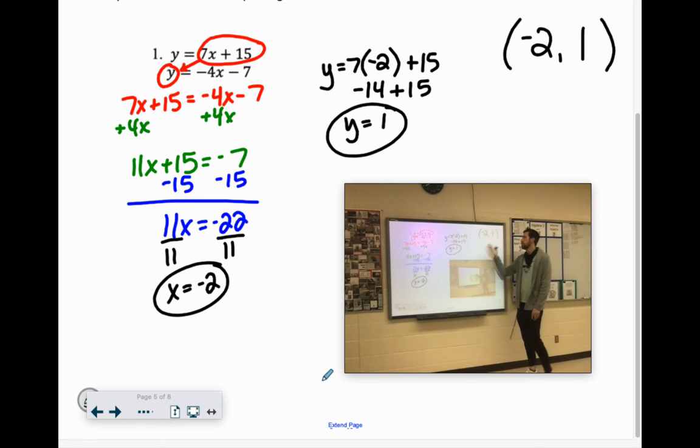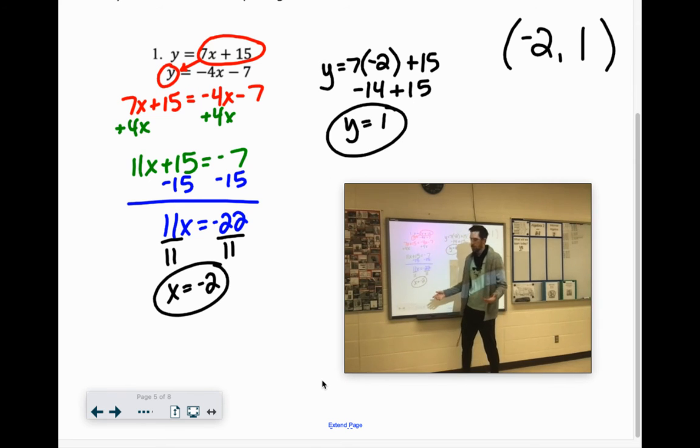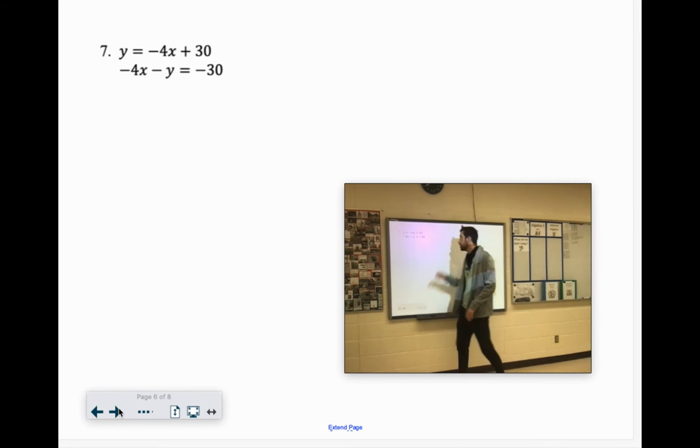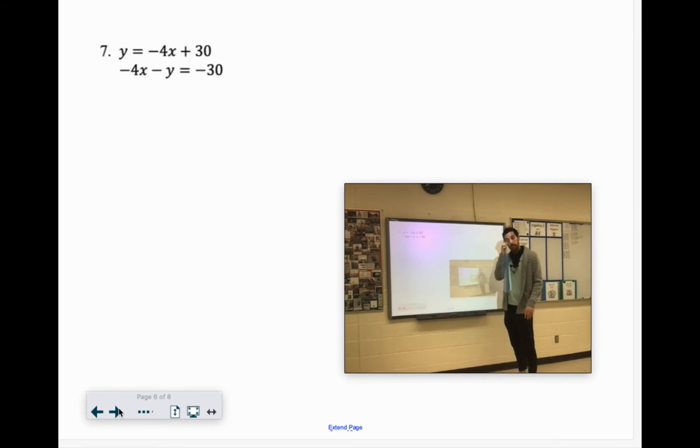So if you were to graph these, they would intersect at negative 2, 1. Now these are great, especially if you have like decimal answers, because you wouldn't be able to tell that if you were to graph it. So this is a more exact thing.